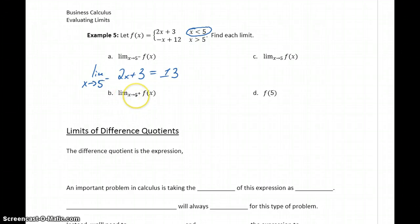To consider the limit as X approaches 5 from the right means we're considering values larger than 5, so we use the second half of that definition for our function.